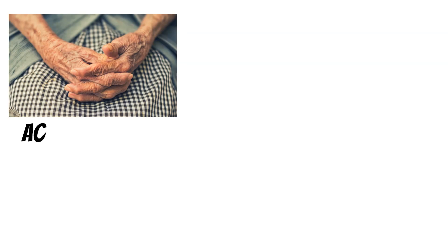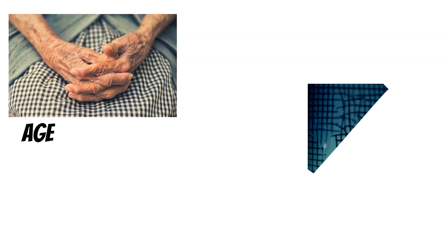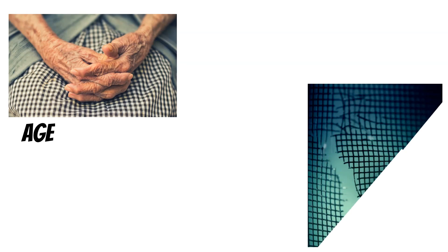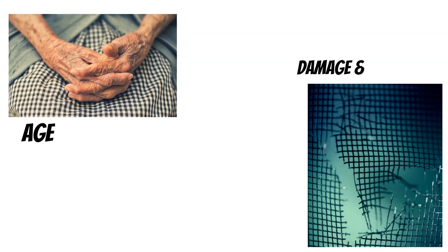Now let's move on to risk factors — those we can influence and those we can't. The first non-modifiable one is age. The longer an individual lives, the more chances the cells in our body have to mutate, become damaged, and become unable to be repaired, increasing the risk of cancer in general, not just CRC. We have mechanisms in our bodies that correct mistakes, but as we age we become less efficient, and mistakes can lead to mutations and eventually cancer.